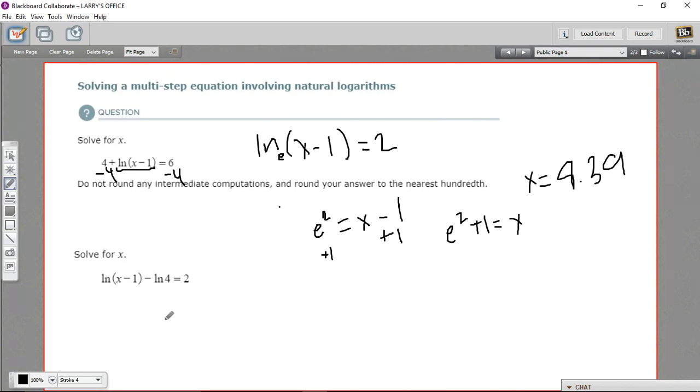Let's try another one. Here we have something a little more complicated. We've got two natural log expressions, the natural log of x minus 1 minus the natural log of 4, and all of that equals 2.